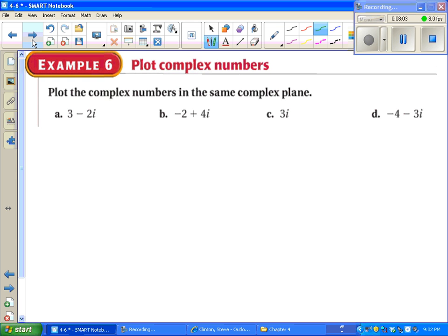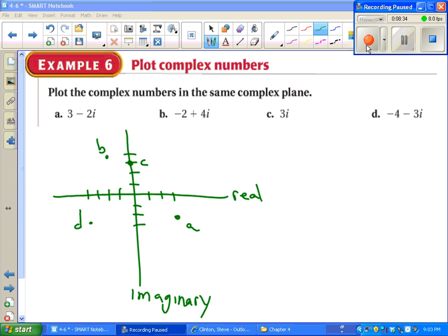Example 6 is the easiest example of the lesson. Plotting complex numbers. Let's talk about how we do that. Plotting a complex number means, instead of calling this the x-axis, we're going to call it the real. And instead of the y-axis, we're going to call it imaginary. So if I'm going to plot 3 minus 2i, I go 3 on the real axis, negative 2 on the imaginary. That's it for part A. Go ahead and pause the video and try to plot these other three points. Label them b, c, and d. Wouldn't it be nice if math was always that easy?